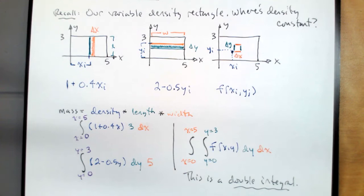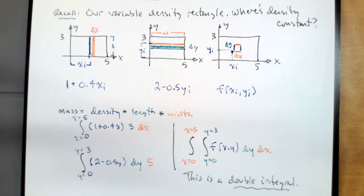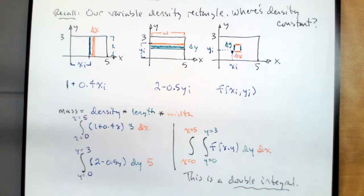This one is called a double integral. It's like after calculus we got much less creative with what we call things — it's an integral but there are two of them, so let's call it a double integral. If there are three, we call it a triple integral. We used to come up with names for things, like the coordinates — one was the abscissa, the other was the ordinate. Now we just come up with more descriptive yet less creative names.